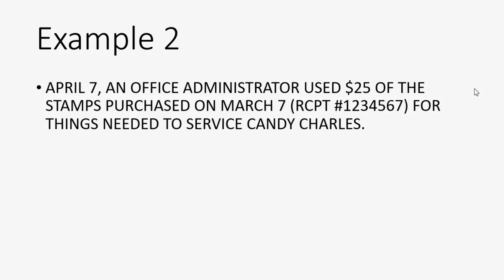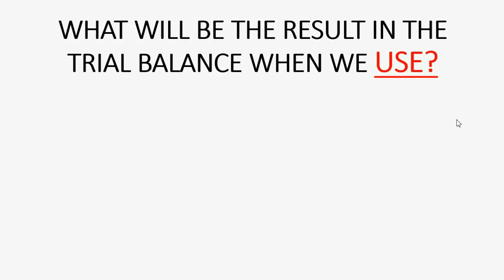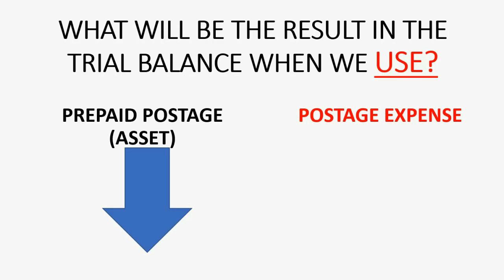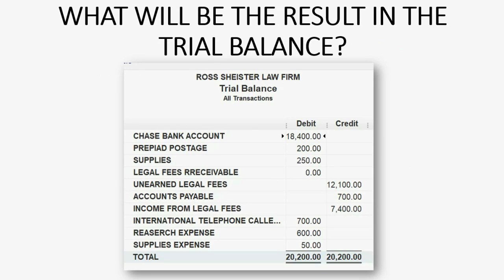Continuing the example, on April 7th, an office administrator used $25 of the stamps purchased on April 6th with that receipt number for client Candy Charles. The prepaid postage will go down by $25 because that asset is no longer worth $200, and postage expense will show up for the first time for $25. So prepaid postage will become $175 and postage expense will appear in the trial balance for $25.